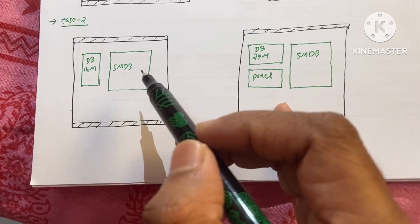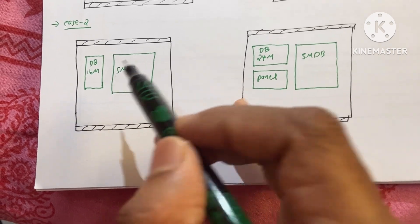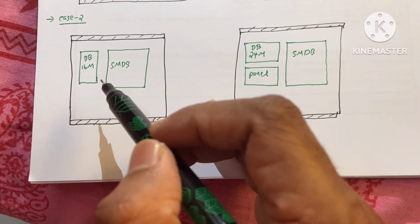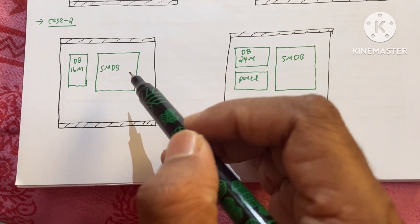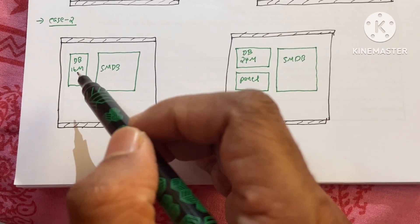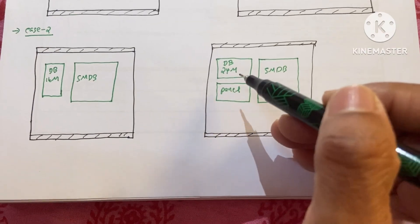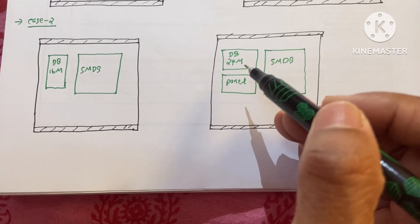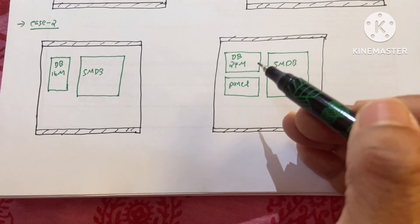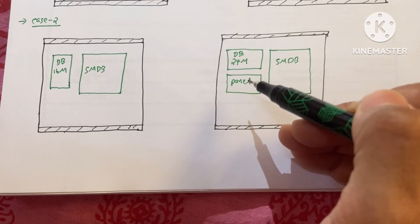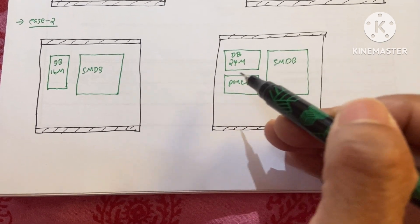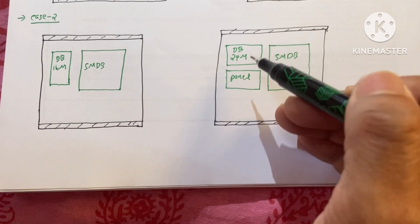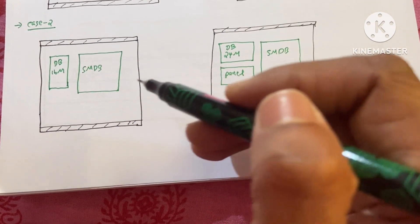In the second case, suppose you have a wall with an SNDB and a 16-module DB, and you need to place a control panel but have no space. During the design stage, convert the 16-module DB to a 24-module DB. The 24-module DB has more width but less height, so you gain space below the DB where you can place the additional control panel.